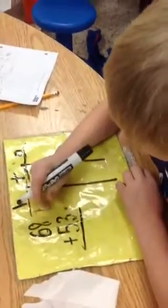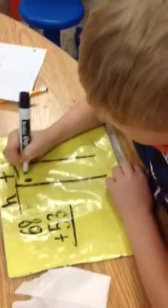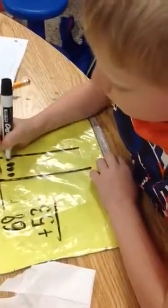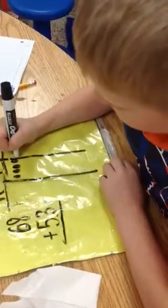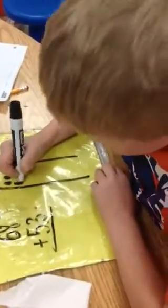Alex is solving 68 plus 53 with a chip diagram. He's also going to show you how to put it in vertical form, showing when we get a new 10 or when we get a new 100.